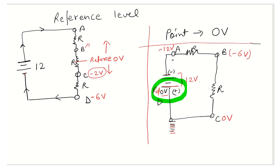Point B is on the upper side of the reference level, so the voltage at B is going to be plus 2 volts. The voltage at point A will be further positive, since A is connected to the positive side of the battery, giving plus 6 volts. These three examples should help you understand how to calculate the voltage at different points with respect to the reference in a circuit.